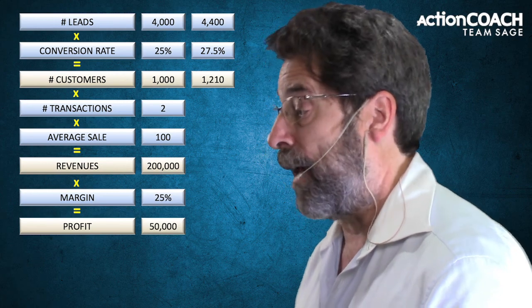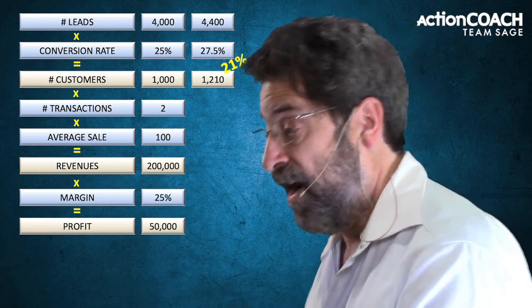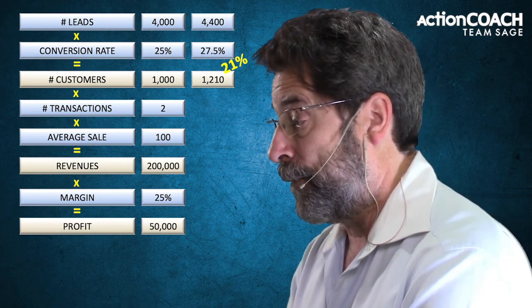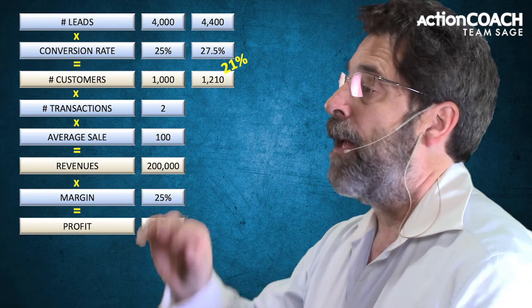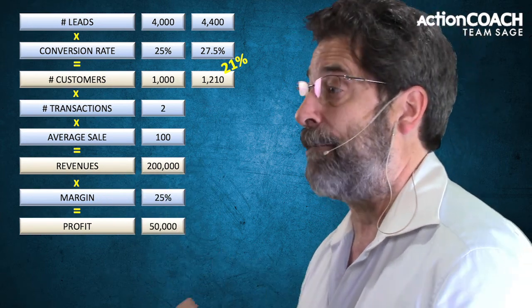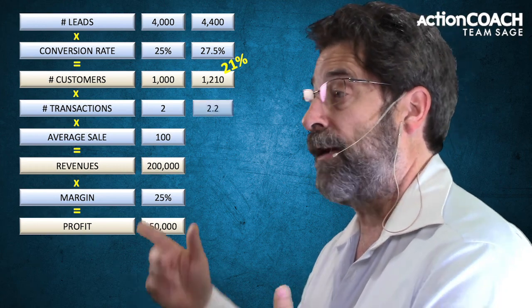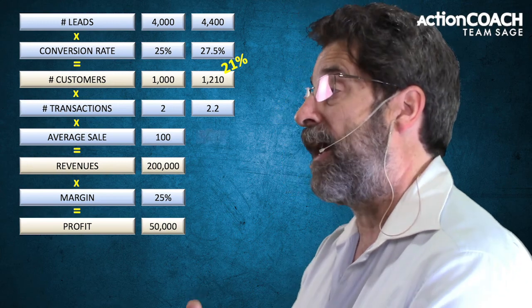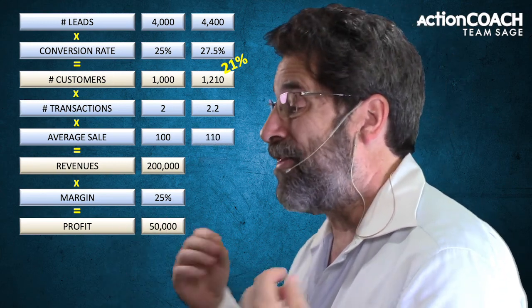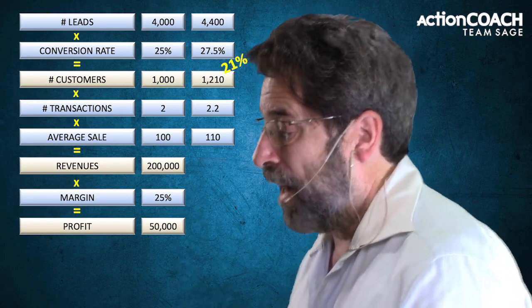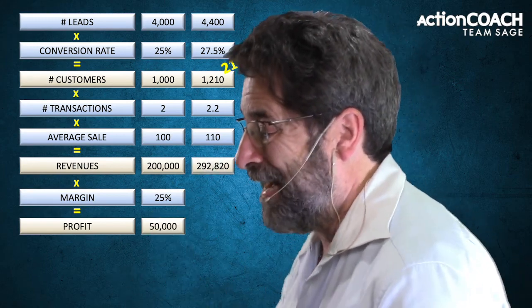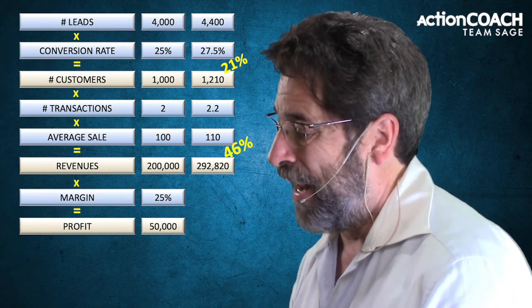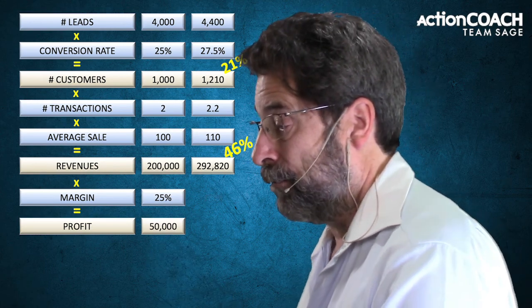That's not just 10% more — it's a 21% increase in the number of customers, because we're multiplying the factors together. Now if I take my number of transactions of two and increase that by 10%, I get 2.2. My average dollar sale of $100 increased by 10% gives me $110. Multiplying those out gives approximately $293,000 in revenues — a 46% increase.